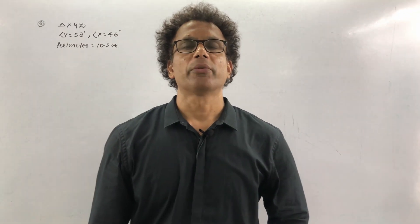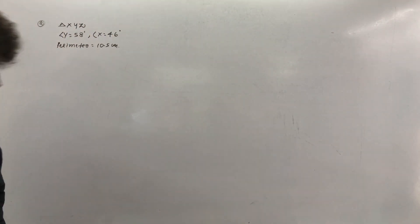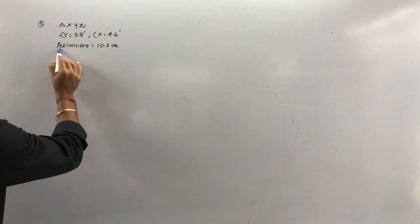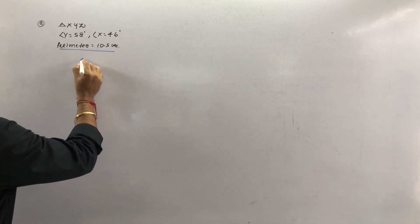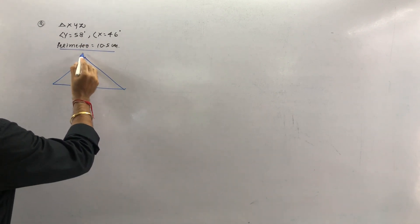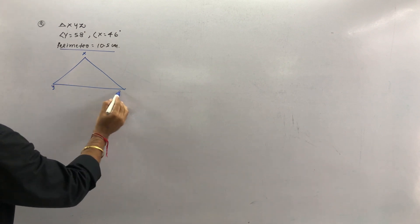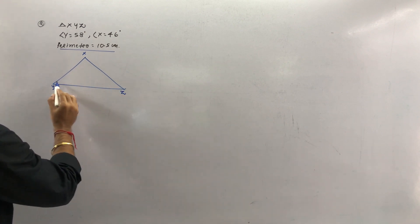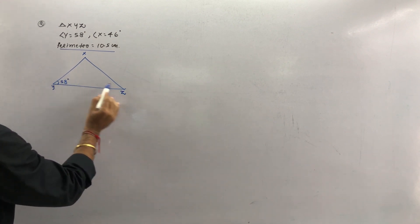Now check sum number 2. Again it is a perimeter sum — not much different, just for practice. The perimeter is equal to 10.5 cm. You have to draw triangle XYZ. Angle Y is equal to 58° and angle Z is equal to 46°.